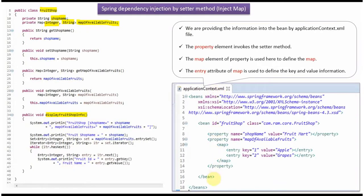This is a Spring configuration file. Here we have specified that the FruitShop object should be created by the Spring container using setter-based dependency injection. The property element invokes the setter method. In this case, name is shop name and value is fruit mart, so the setShopName method will be called by the Spring container. Next, name is map of available fruits, so the setMapOfAvailableFruits method will be called by the Spring container and the map will be set.